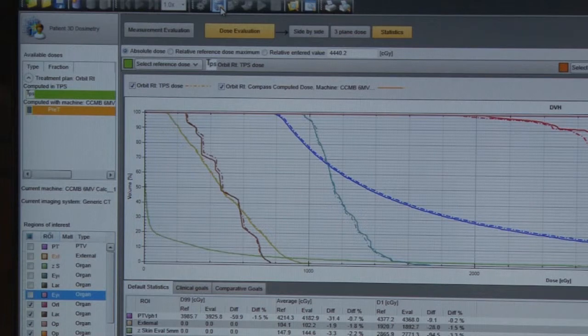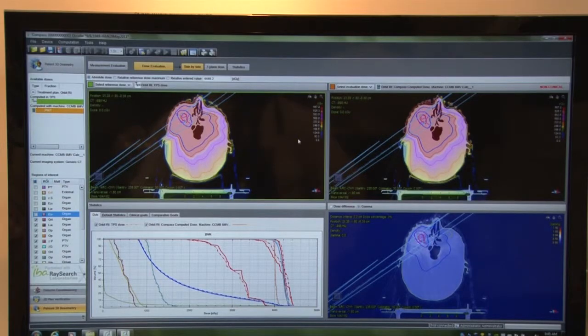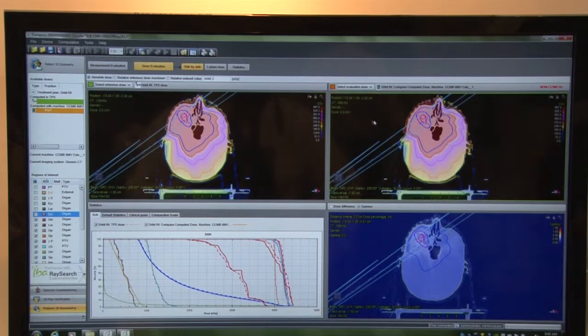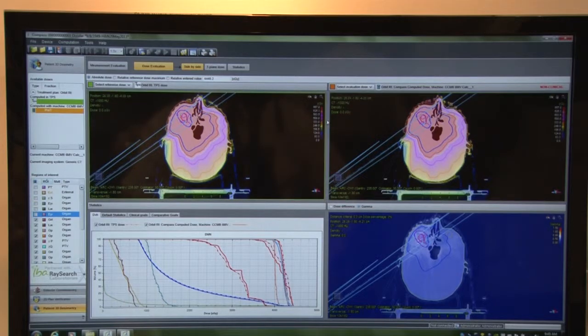So once you've evaluated your patient, you have the ability to export that plan into the SQL database that's built into Compass. One of the new features with the 3.0 release is the ability to compare the actual TPS data to a reconstructed dose or a recalculated dose. We also have the ability to take a reconstructed dose and compare it to our calculation algorithm.